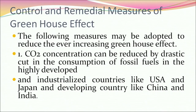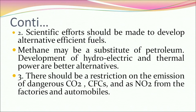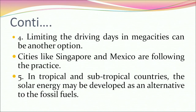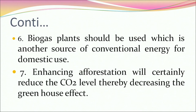The following measures may be adopted to reduce the ever-increasing greenhouse effect. First, CO2 concentration can be reduced by a drastic cut in consumption of fossil fuels in highly developed and industrialized countries like the United States and Japan, and developing countries like China and India. Second, scientific efforts should be made to develop alternative efficient fuels — methane may be a substitute for petroleum, and hydroelectric and thermal power are better alternatives. There should be restrictions on emission of CO2, CFCs and NO2 from factories and automobiles. Limiting driving days in mega cities like Singapore and Mexico is another option. In tropical and subtropical countries, solar energy may be developed as an alternative to fossil fuels. Biogas plants should be used as another source of energy for domestic use. Enhancing afforestation will certainly reduce carbon dioxide levels, thereby decreasing the greenhouse effect.